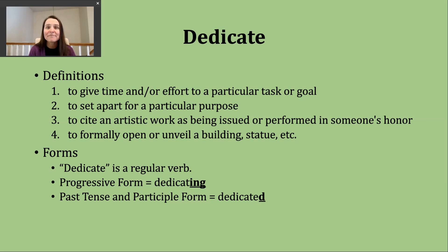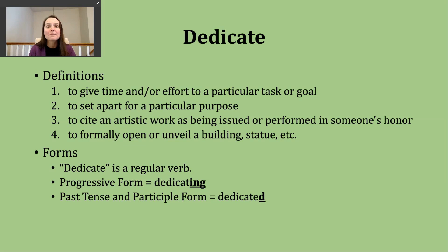'Dedicate' is a regular verb. To make the progressive form, drop the 'e' and add '-ing' to form 'dedicating.' The past tense and participle forms are made by adding the letter 'd,' since the verb already ends in an 'e.' Because the base verb ends in an unvoiced 't' sound, the past tense ending makes an '-id' sound, adding an extra syllable: 'dedicated.'